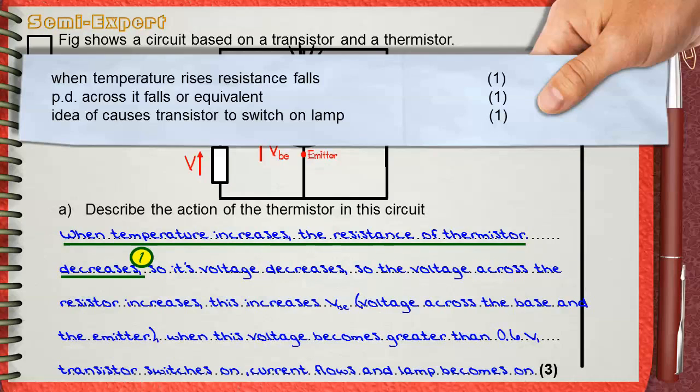The second mark is for saying that the potential difference, or the voltage across the thermistor will also decrease. And the third mark is for explaining what happens in the transistor to make it switch on and make the lamp light.